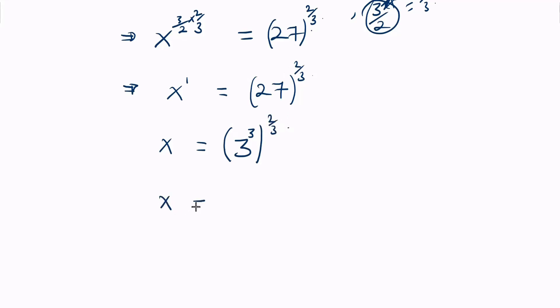This means we have x equaling 3 raised to power 3, multiplied by 2 divided by 3. Remember from the rules of indices, if you have a raised to power m raised to power n, you multiply the powers.